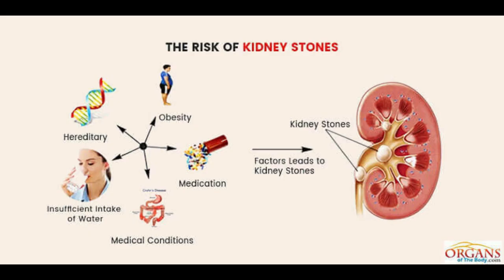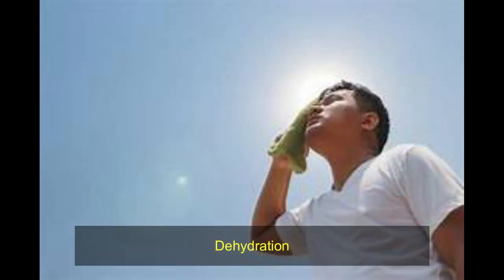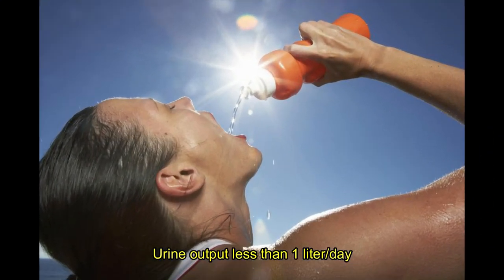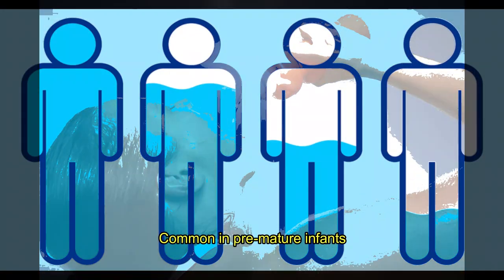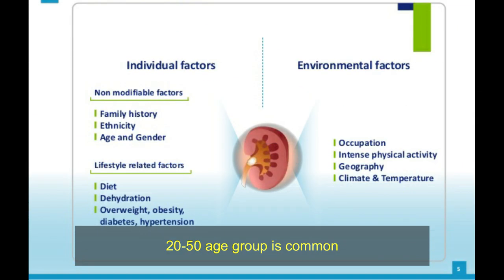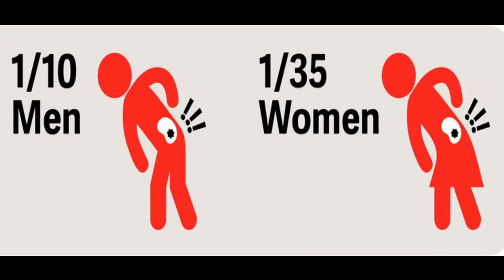Next, we see the risk factors for kidney stones. Dehydration is the greatest risk factor. The greatest risk factor for kidney stones is making less than one liter of urine per day. This is why kidney stones are common in premature infants who have kidney problems. However, kidney stones are most likely to occur in people between the ages of 20 and 50.